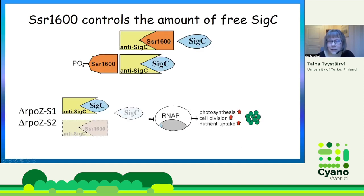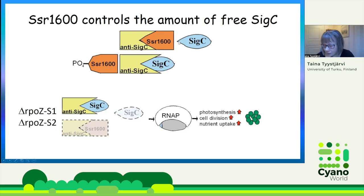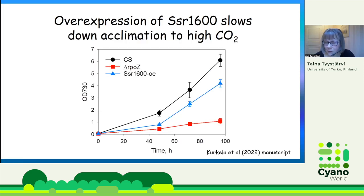According to this system, if we have more of the anti-sigma factor antagonist SSR1600, we should have more free SigC. To test this, we overexpressed SSR1600. What we see is that those cells grow more slowly in high CO2 than the control cells, but better than the Delta-RPOZ cells.